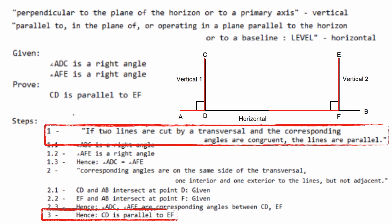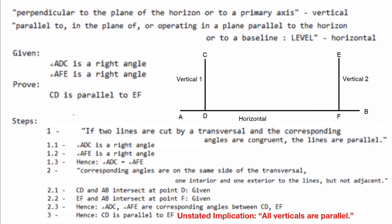He already said this in step one and could have saved a lot of time. But the unstated implication of this proof, and in the diagram, is that all verticals are parallel, which agrees with Bev's explicitly stated opinion that all verticals in reality are parallel.